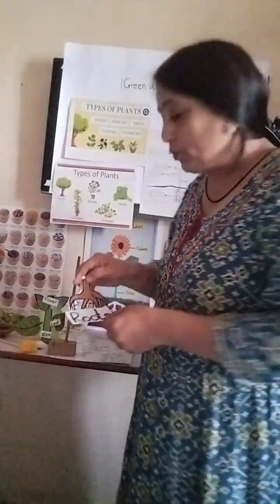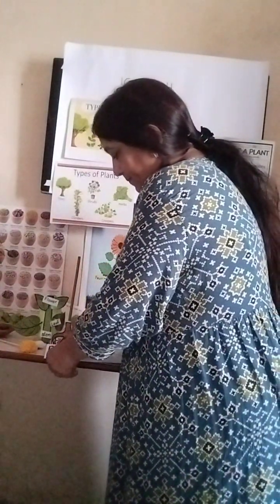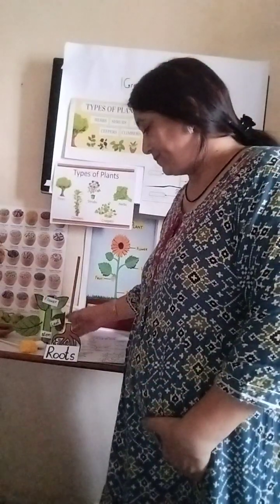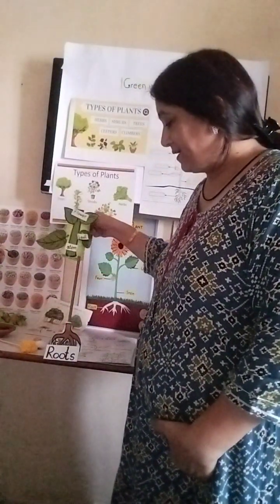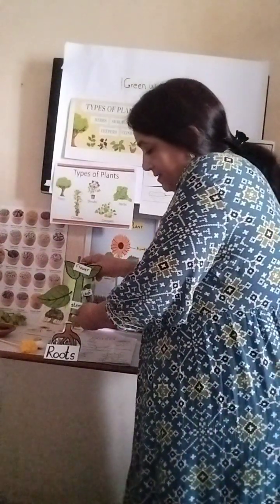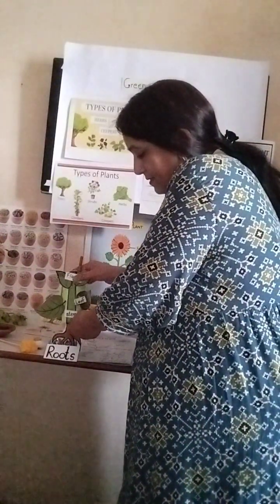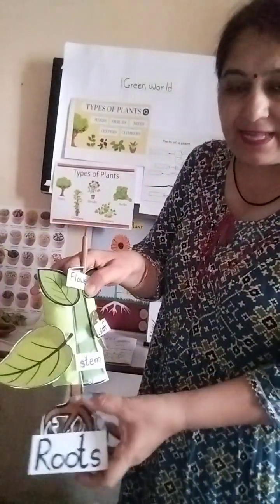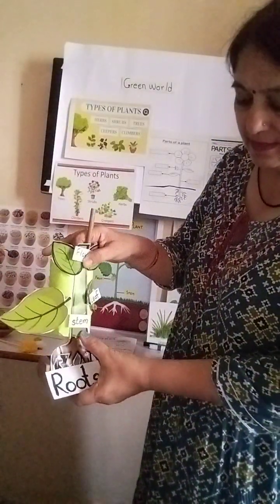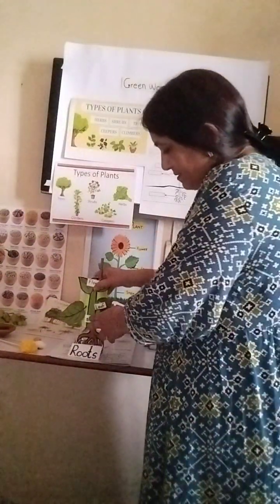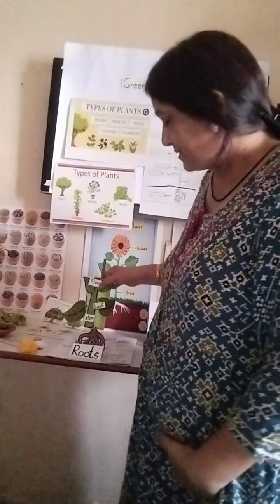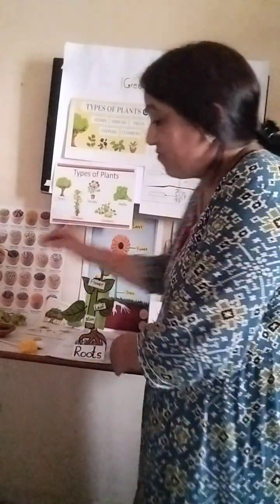Plants grow from the roots. Then comes the stem, then leaves, and then comes the flowers.